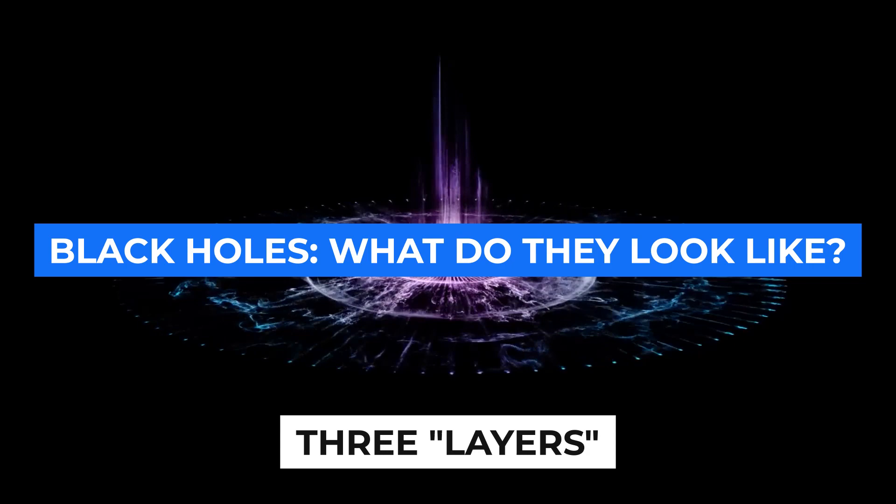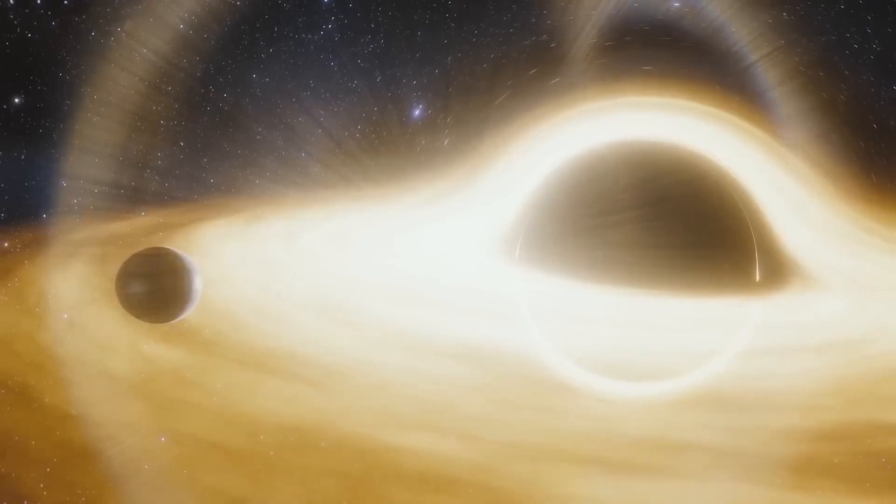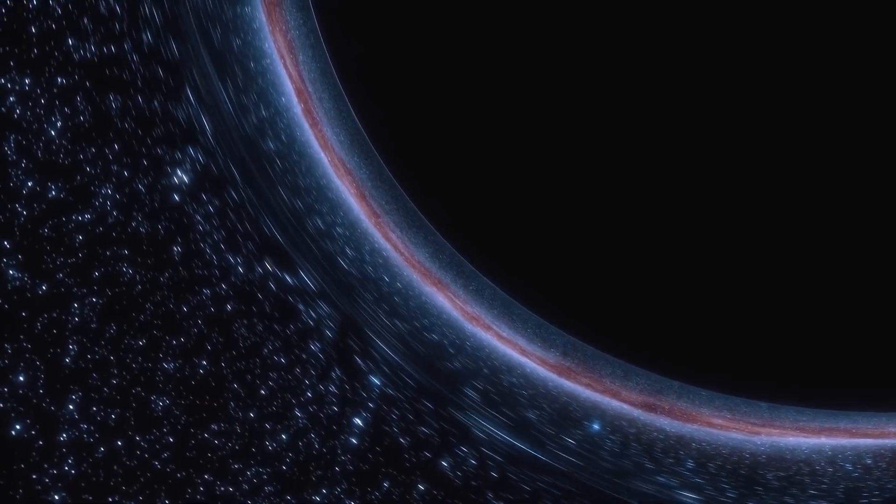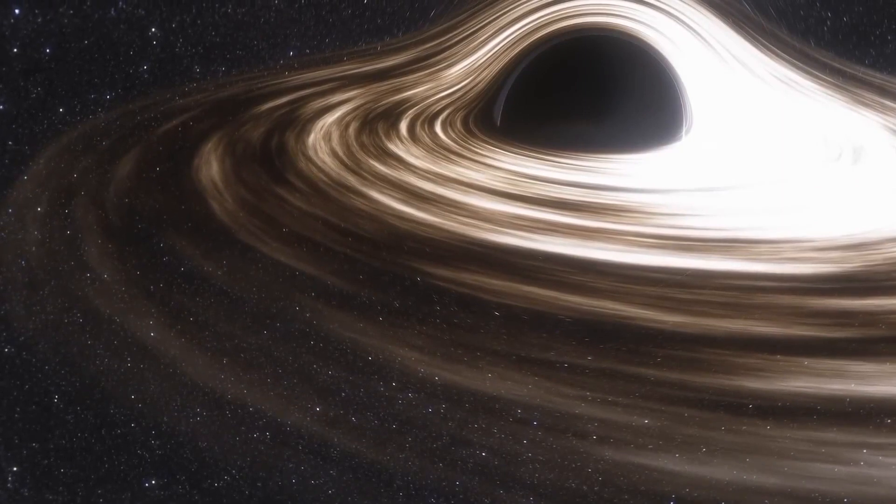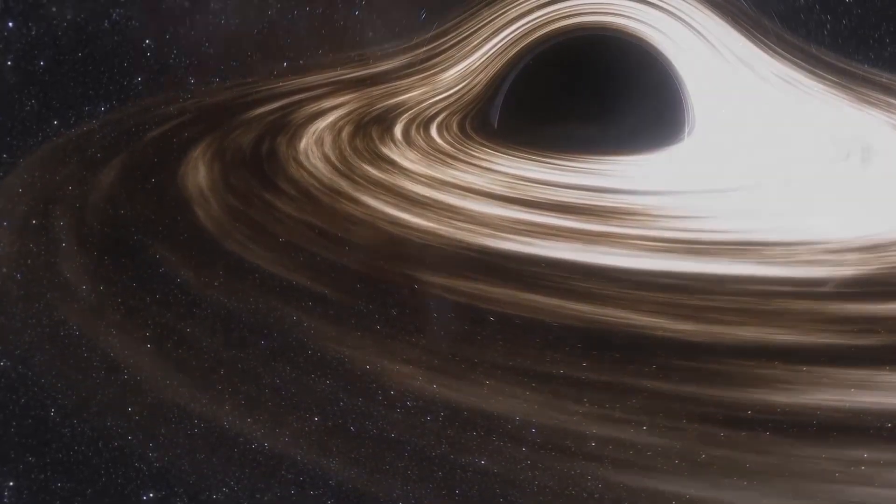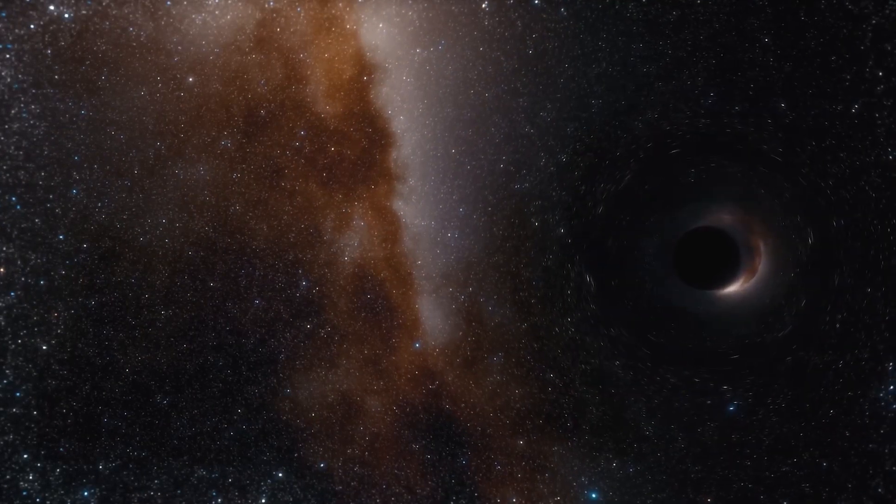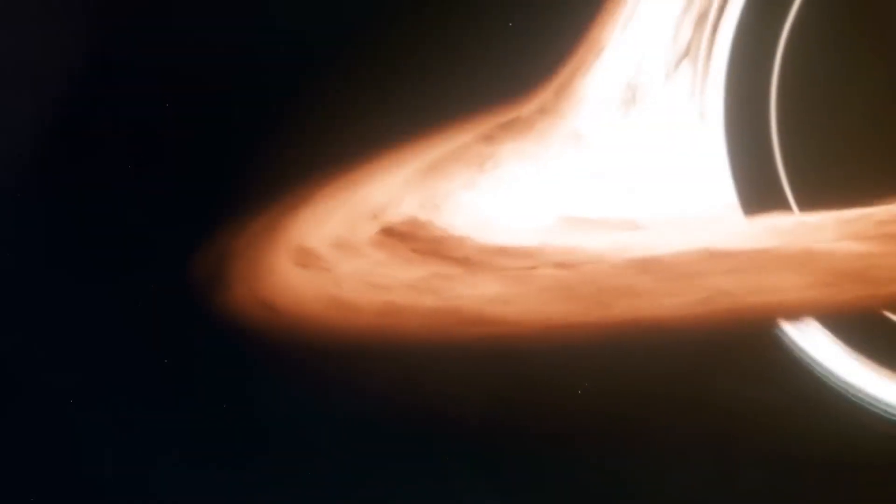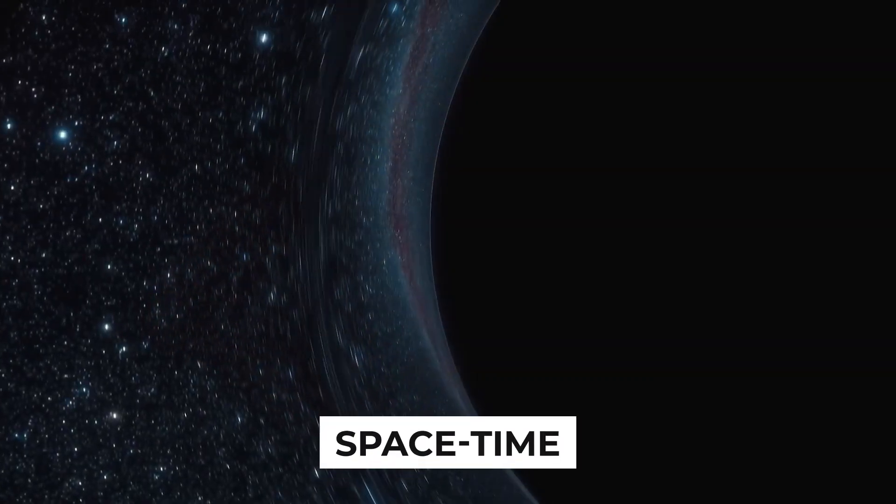There are three layers to a black hole: the event horizon, the singularity, and the interior. An event horizon is a region around the black hole that prevents light from escaping. A particle cannot escape once it has passed the event horizon. The singularity is the zone inside a black hole when all of the black hole's mass is condensed into one location in space-time.